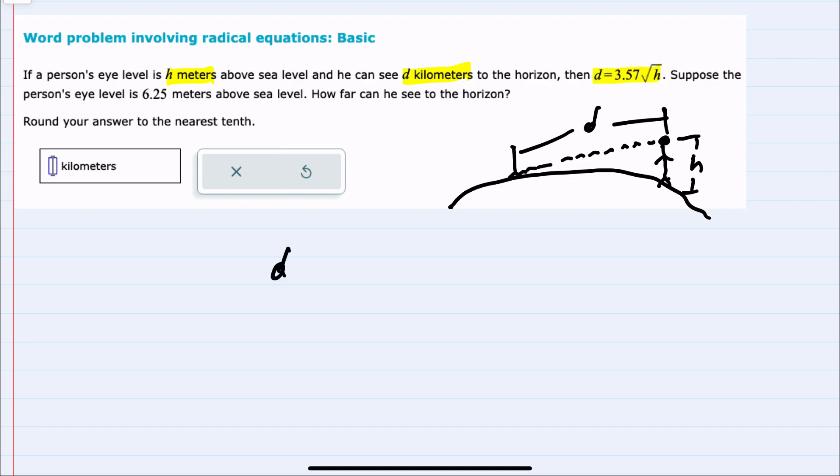Our formula is d, the distance seen to the horizon, equals 3.57 times the square root of h.